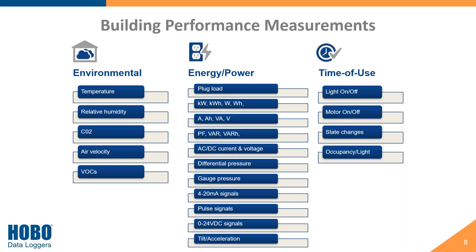We can also record pulse signals, DC voltage, and we have tilt and acceleration data loggers. For our time-of-use data loggers, we have options for light on and off, motor on and off, state changes, and occupancy/light on and off.